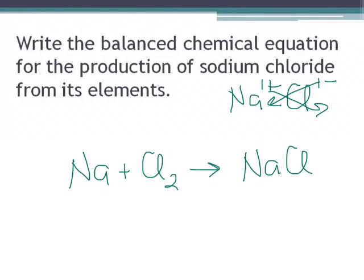Now we have to balance it. On our reactant side, we have 1 sodium, and on our product side, we have 1 sodium. On our reactant side, we have 2 chlorines. On our product side, we only have 1, so we need to add a coefficient of 2. That also changes our amount of sodium. We now have 2 sodium atoms on our product side, so we need to add the 2 in front of the sodium on our reactant side.